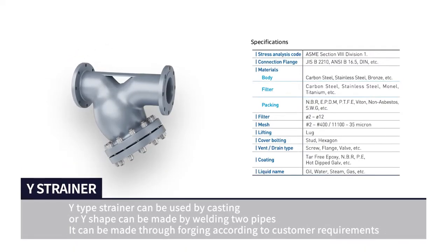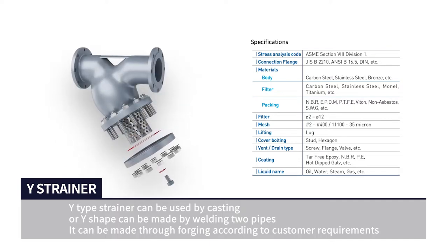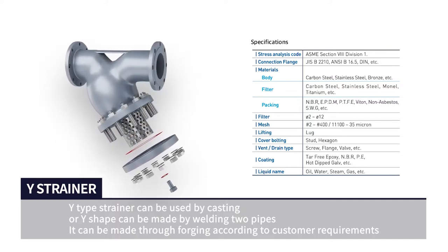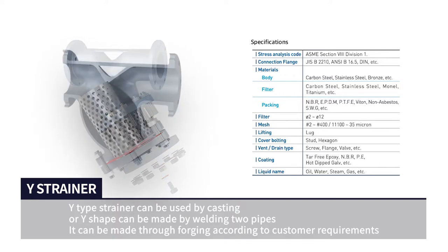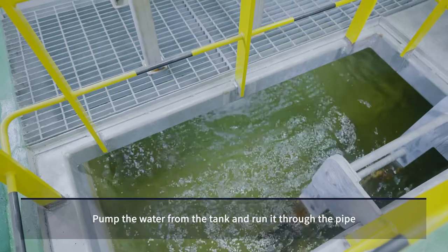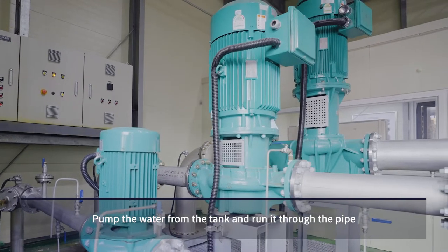Y-type strainer can be manufactured by casting, or a Y-shape can be made by welding two pipes. It can also be made through forging according to customer requirements. Water is then pumped from the tank and run through the pipe.